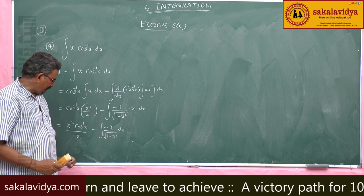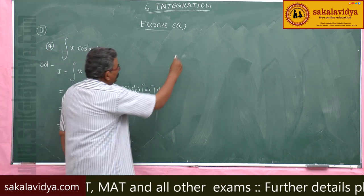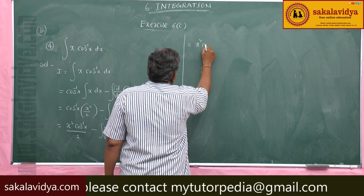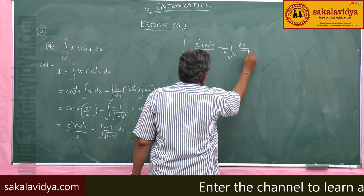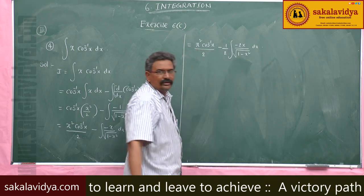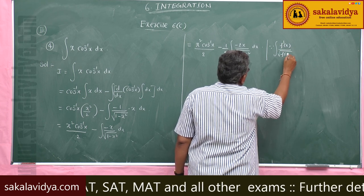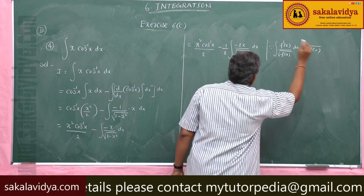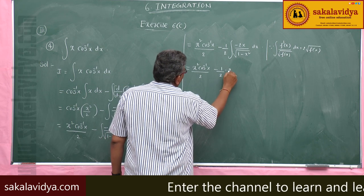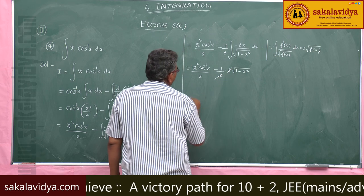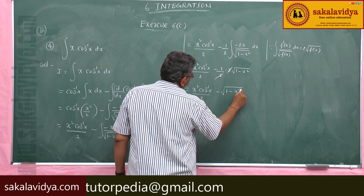Just observe this integral. The differentiation of 1 minus x squared is minus 2x. So just multiply and divide by 2. This equals x squared cos inverse x by 2, minus of integral of minus 2x by root of 1 minus x squared dx. This is in the form of integral of f'(x) by root f(x) dx, which equals 2 root f(x). So now x squared cos inverse x by 2, minus half times 2 times root of 1 minus x squared — the 2s cancel — giving x squared cos inverse x by 2 minus root of 1 minus x squared plus constant of integration.